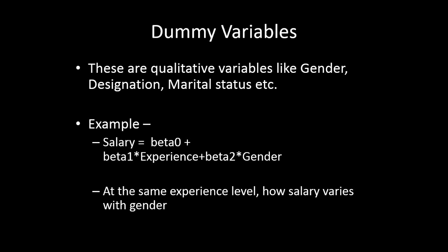These variables are also important predictors in predictive models. For example, let's say we have a model where salary of an employee is the dependent variable and the independent variables are the experience of an employee and his gender. Experience is, of course, a quantitative variable, whereas gender is a qualitative variable.